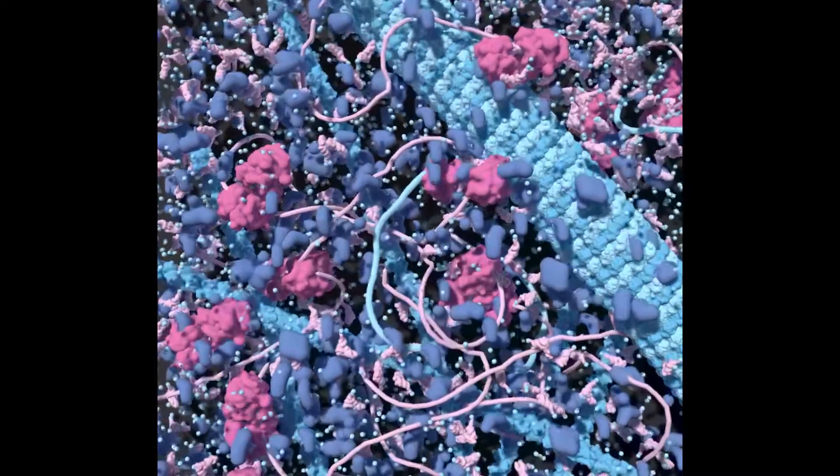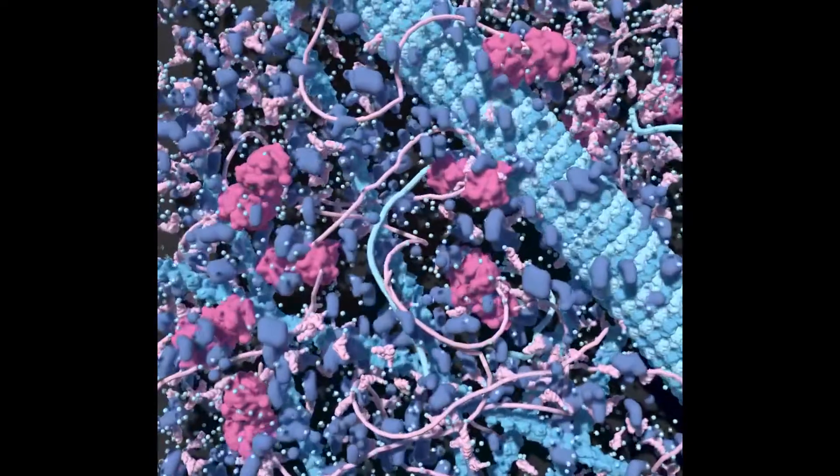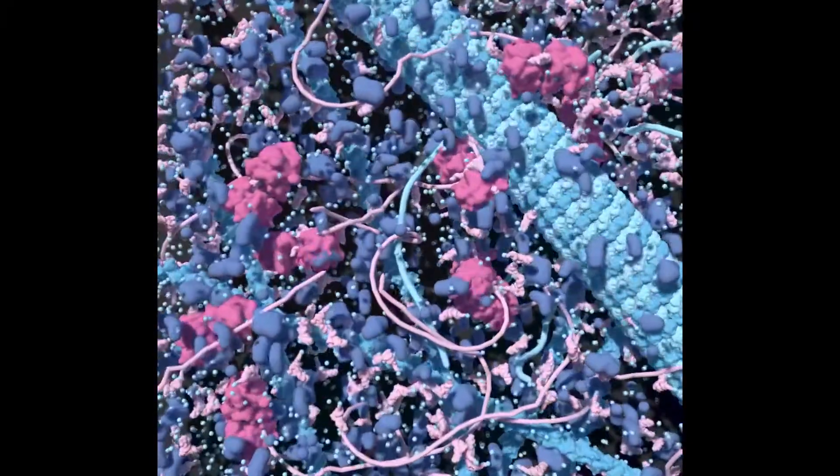In this video, we construct a small portion of the cytoskeleton with microtubules and actin filaments. We trace over David Goodsell's cytoskeleton illustration from his Machinery of Life book.